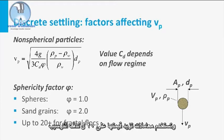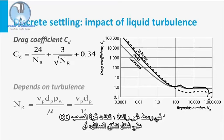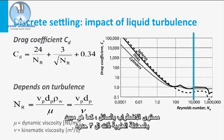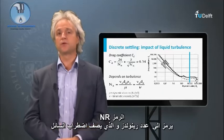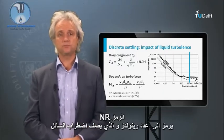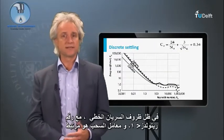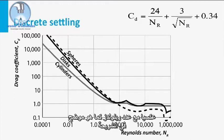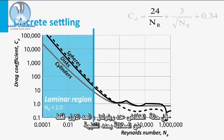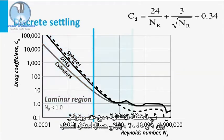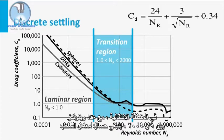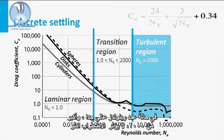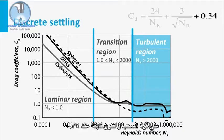In a non-stagnant medium, the drag force CD is dependent on the liquid flow regime or the level of liquid turbulence, as indicated by the upper 3-term equation. The symbol NR stands for Reynolds number, which describes the liquid turbulence. Under laminar flow conditions, with Reynolds numbers less than 1, the drag coefficient is reciprocally correlated to Reynolds number, as illustrated in the slide. At low Reynolds number, only the first term of the equation determines the outcome. In the transition area, with Reynolds numbers between 1 and 2,000, the drag coefficient should be calculated using the full 3-term equation. At very high Reynolds numbers, larger than 2,000, turbulence is not further impacting the drag force, which is then fixed at 0.34.